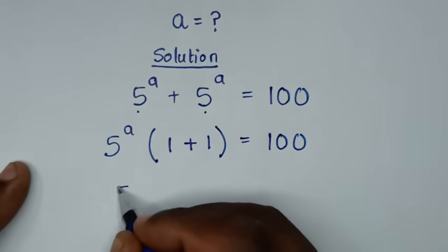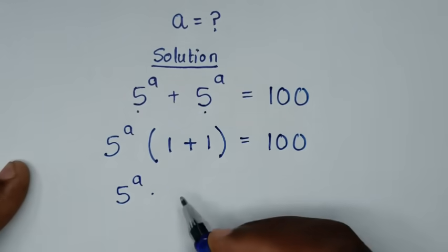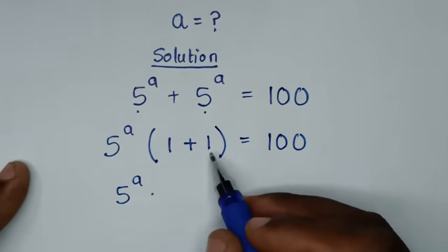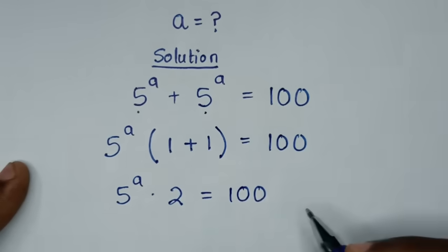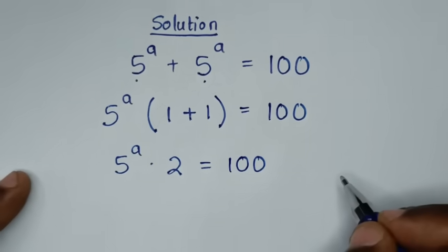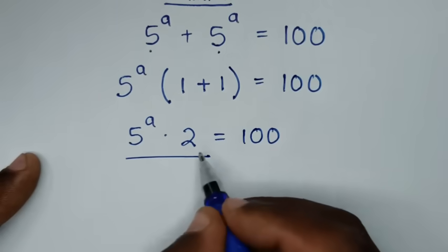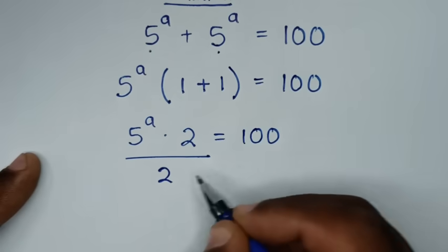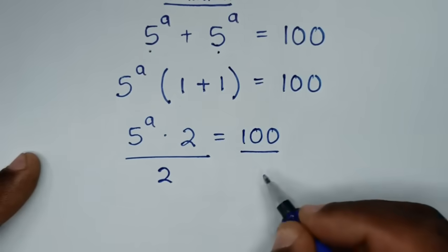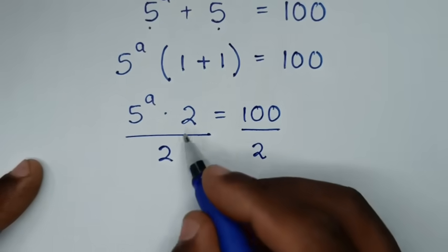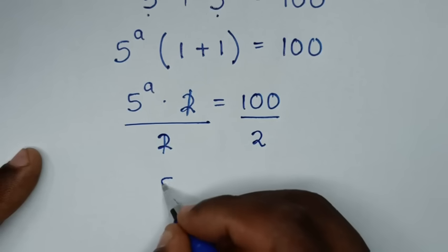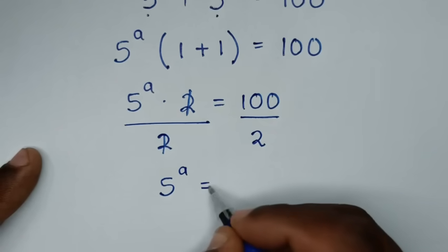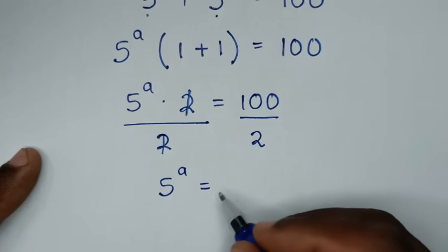Then it will be 5 power a times 1 plus 1, which is 2, is equal to 100. In the next step we'll divide by 2 on both sides, so this and this will cancel, then it will be 5 power a is equal to 100 divided by 2, which is 50.